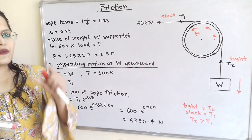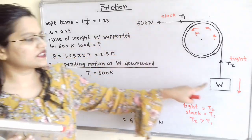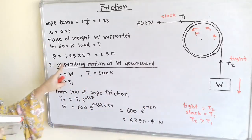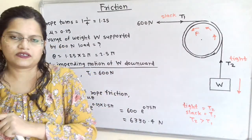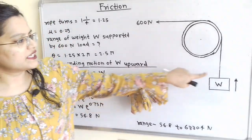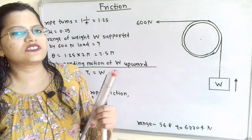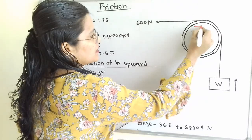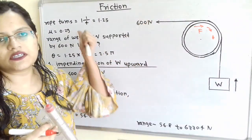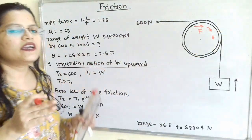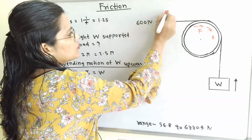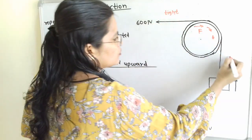Now we find the second value — the other boundary of the range in which the 600 N force can support load W. In the second case, the impending motion of W is in the upward direction. The frictional force acts in the opposite direction to motion. Since the 600 N force and the frictional force are now in opposite directions, the rope connected to the 600 N force is the tight side, and the other side is the slack side.